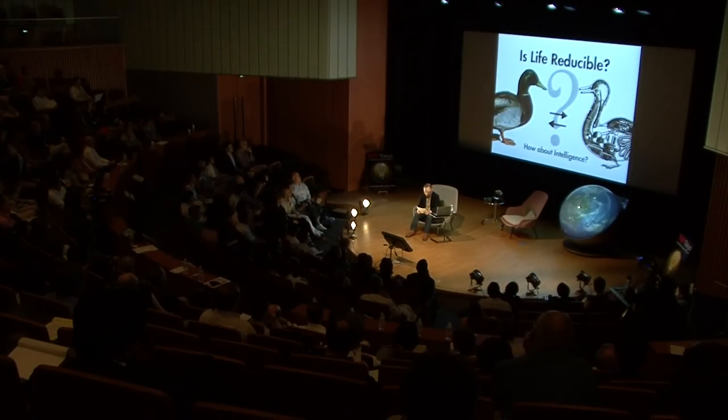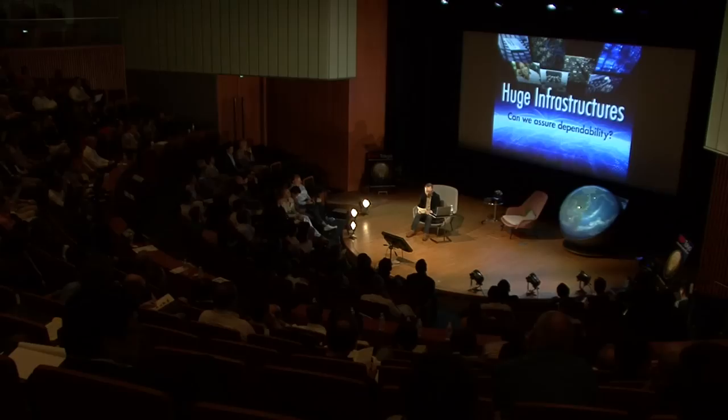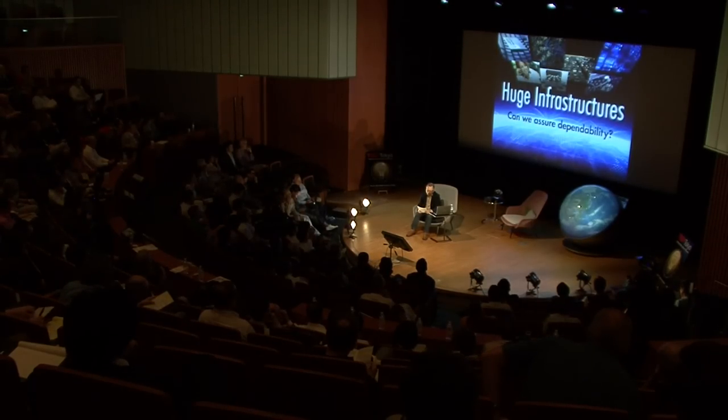I often questioned myself whether life and intelligence can be broken down into parts. We know the double helix structure of genes and neural networks of the brain, but can we reconstruct life and intelligence from them? When the internet spread and new application programs were added to the network to form ultra-distributed infrastructures, how can one know the entire system and its behavior and assure the dependability of each infrastructure?